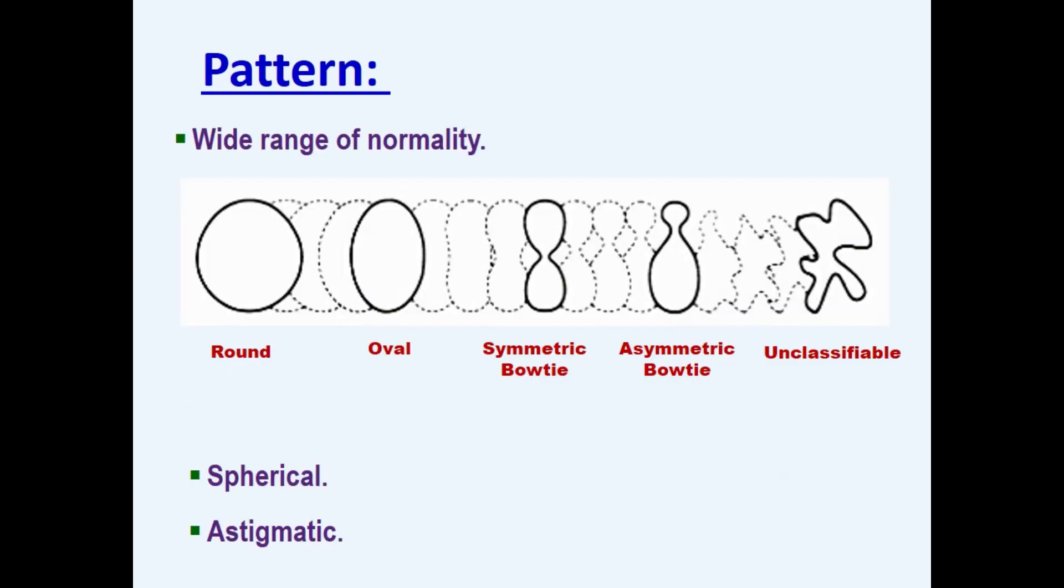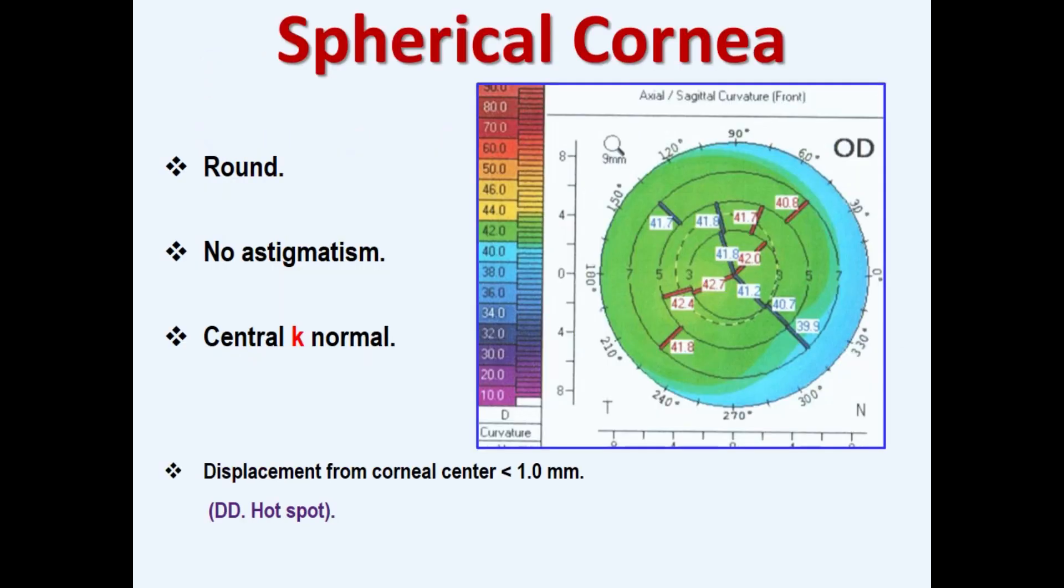Topographic pattern. One should keep in mind that there is a wide spectrum of normality of human corneas, and regular corneas are either spherical or astigmatic. Spherical cornea has a round pattern which indicates no significant astigmatism. This round pattern is located centrally and the amount of displacement of the corneal center is less than 1 mm.